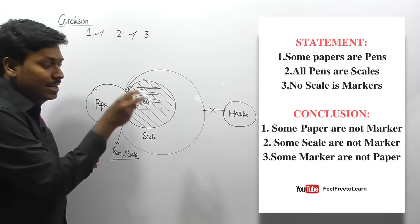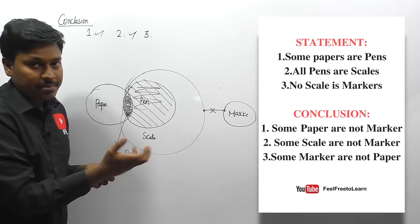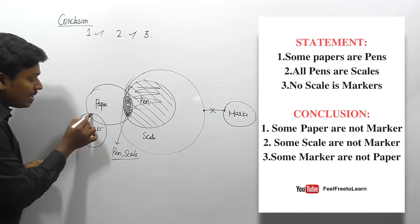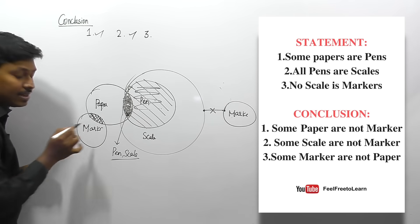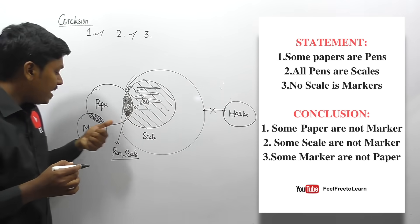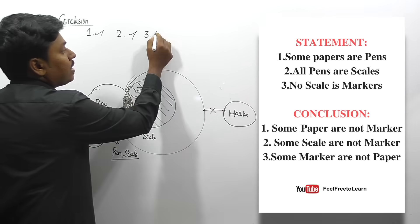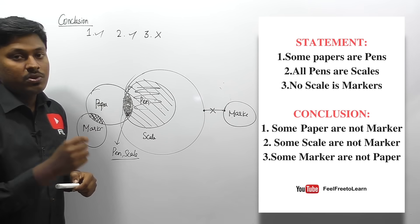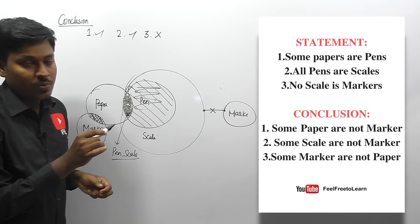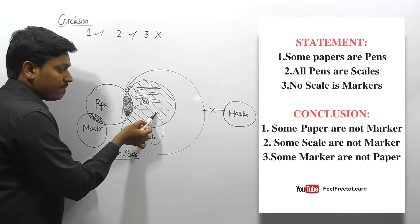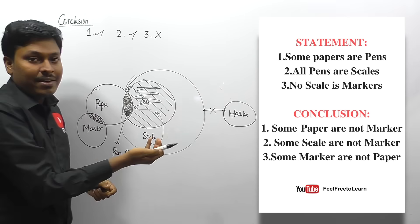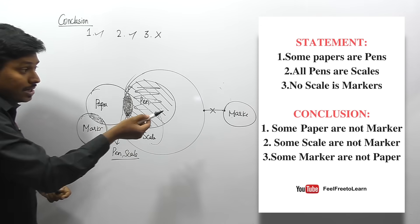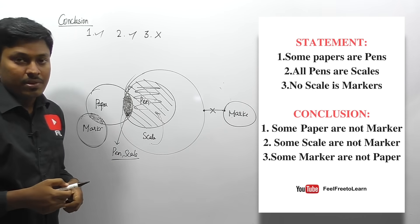Conclusion three: 'some marker are not paper.' Read the first two words: 'some marker.' Marker does not have a 'some' region defined, so we can draw marker separately. When we draw marker there, some markers are paper — but the conclusion says some markers are not paper. So conclusion three is false. Final answer for question one: conclusions one and two are true.